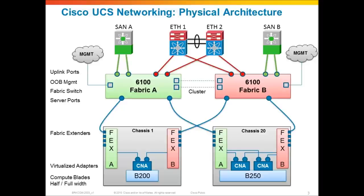There are a couple of new things in UCS today not shown here. There are appliance ports where you can take a NAS filer and connect it directly to the Fabric Interconnect. There are also storage ports where you can take a storage array, such as an EMC or NetApp array, and attach it directly to the Fabric Interconnect. I will cover that in subsequent slides. You can also connect rack mount servers to this system in addition to blades.